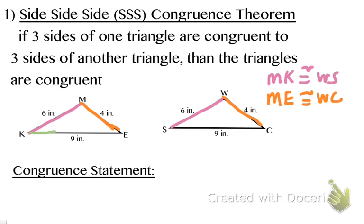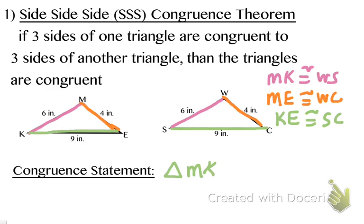The last pair of sides: side KE on the left triangle is nine inches, and that is congruent to side SC on the other triangle, which is also nine inches. So side KE is congruent to side SC. Since we have three pairs of congruent sides, I can write a congruence statement: triangle MKE is congruent to triangle WSC, by the side-side-side rule.